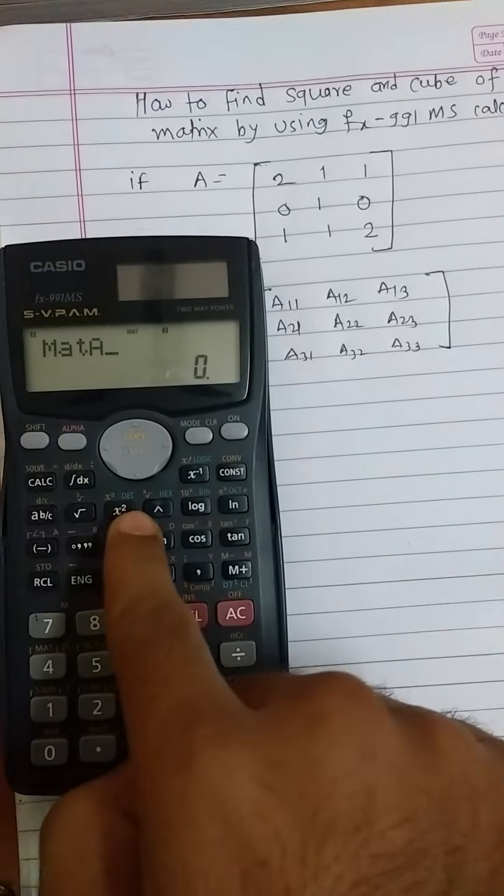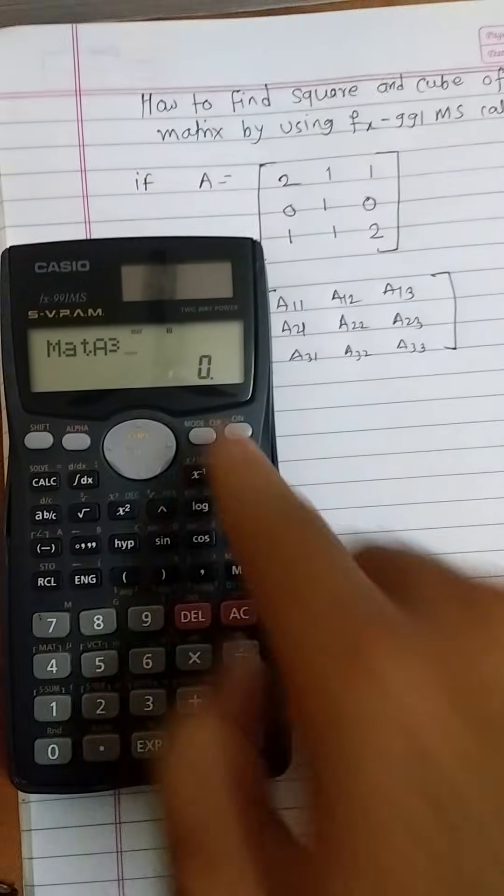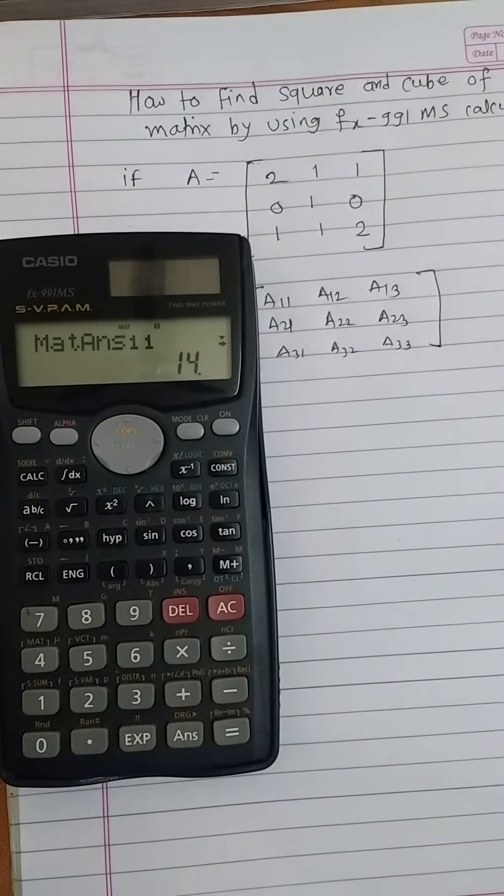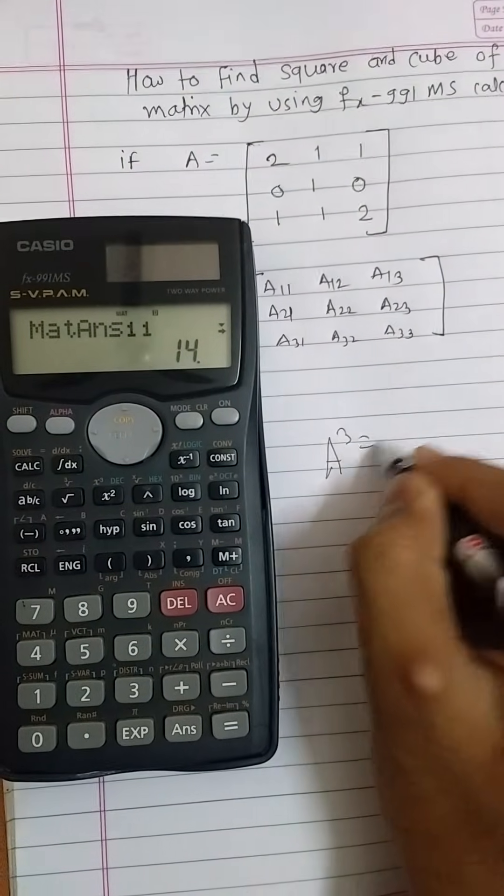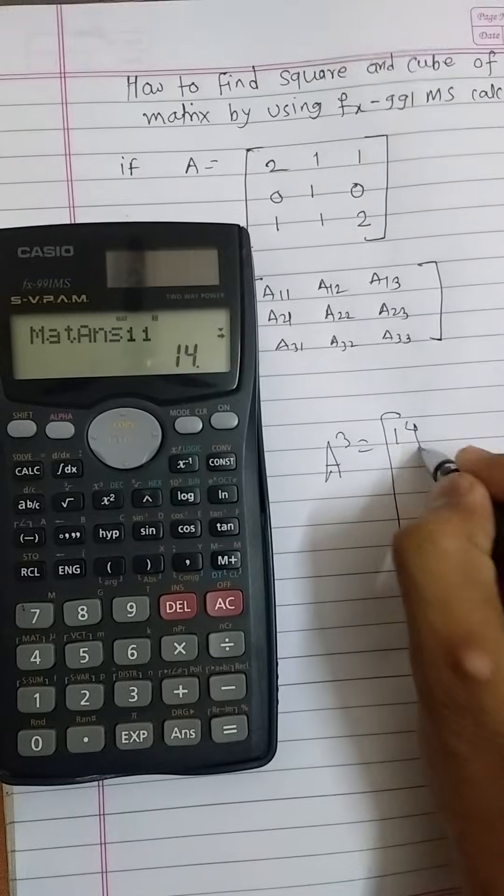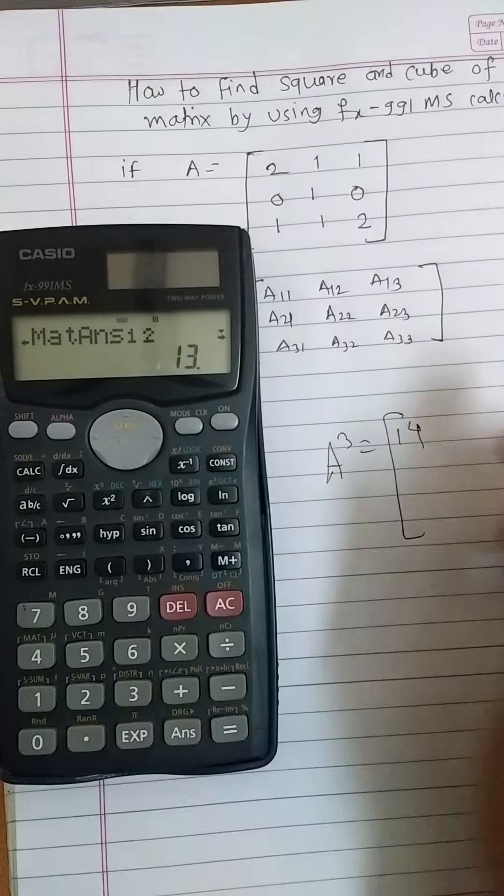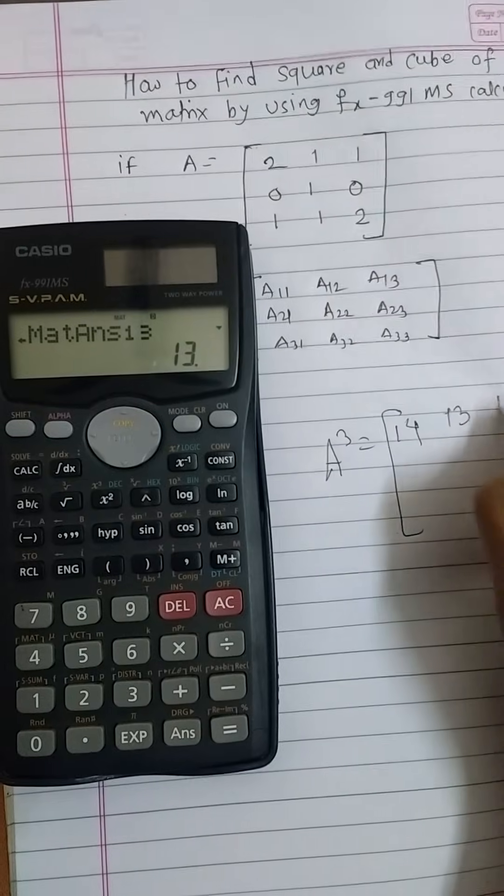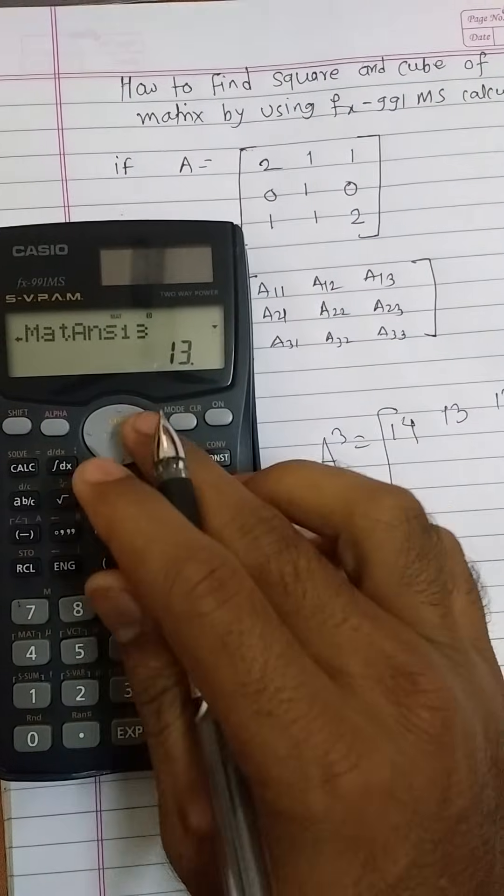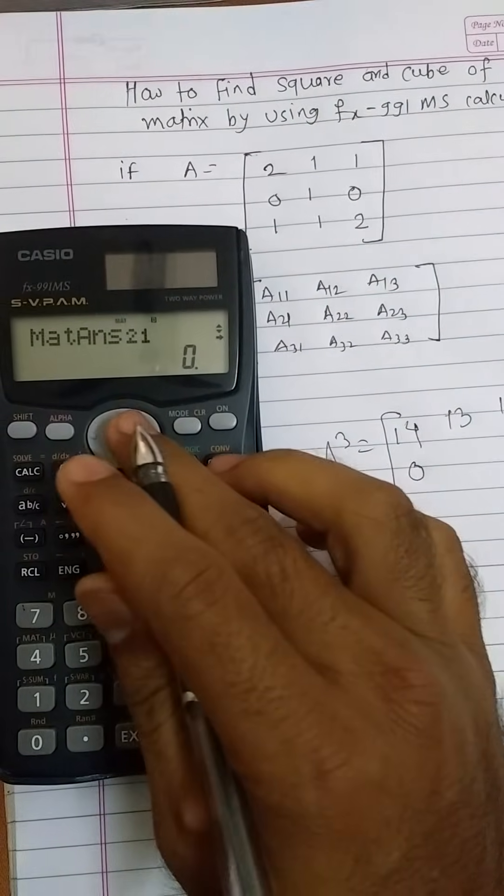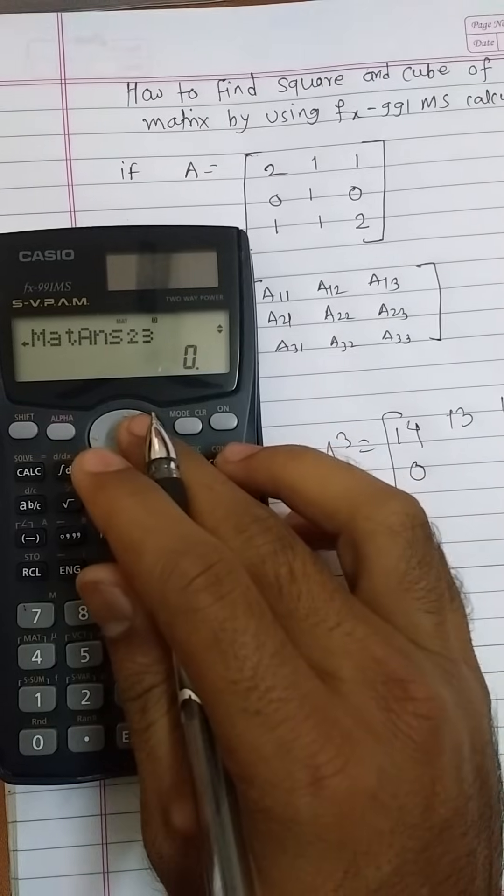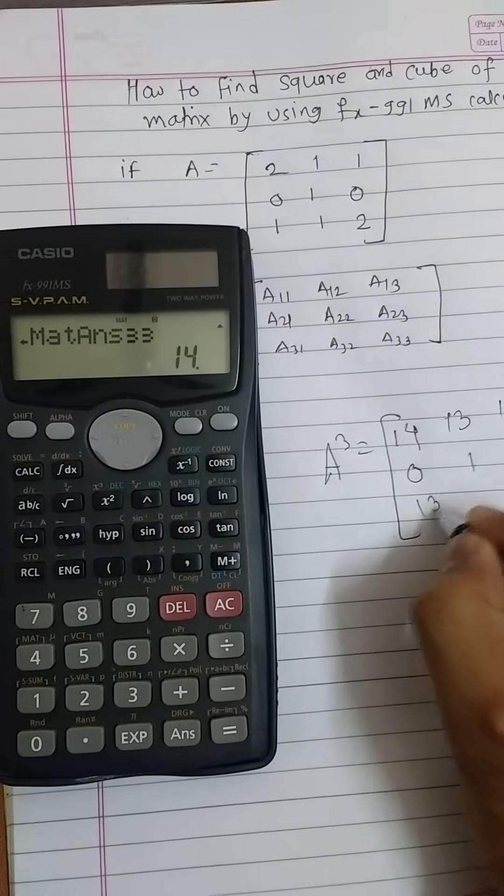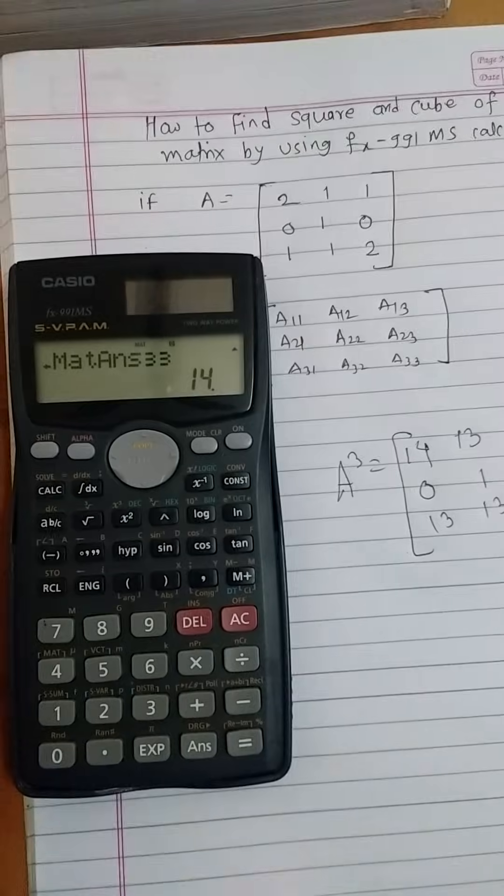X squared, that is X cube. Then we will get our answer. The first entry is 14. By scrolling on right, we can see all the entries: 14, 13, 13, 13, 0, 1, 0, 13, 13, 14.